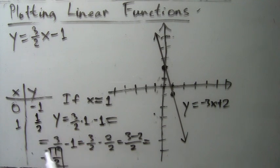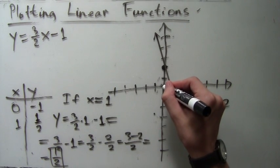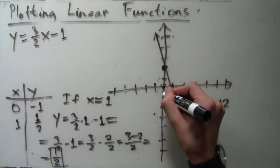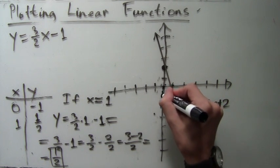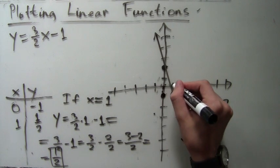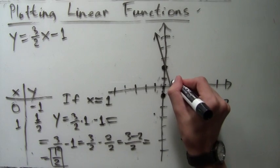Now we are ready to plot these two points and to connect them to make the plot of our linear function. (0,-1) is just 1 below the origin. (1,1/2) is going to be 1 to the right and 1/2 up. So there I've drawn it as close as I can.